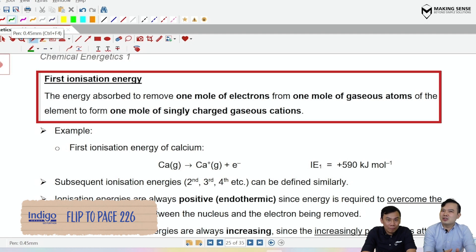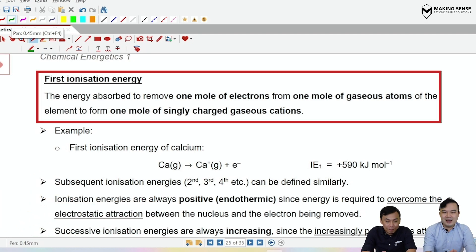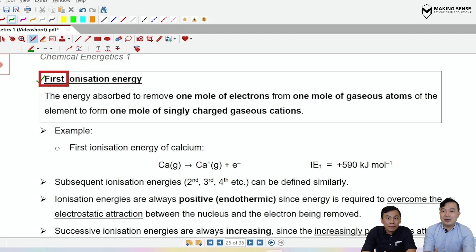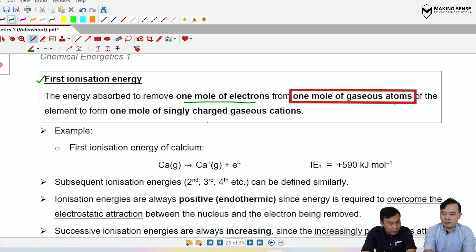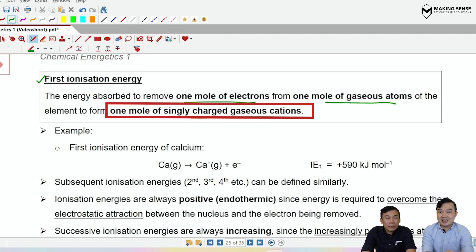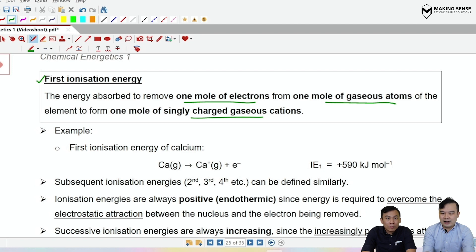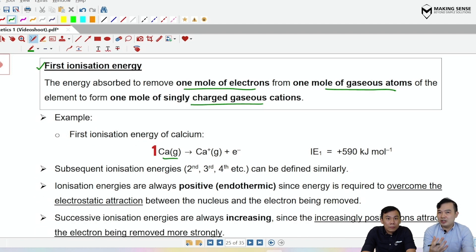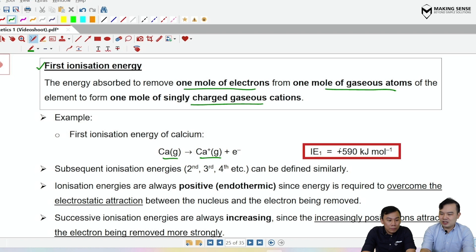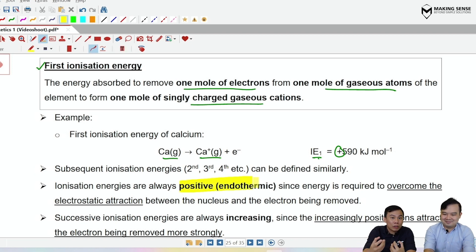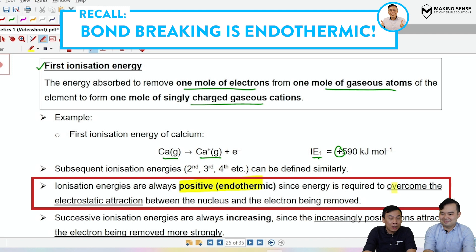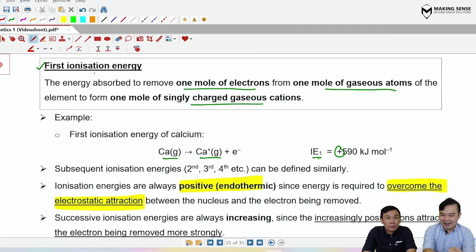The second enthalpy change needed for the Born-Haber cycle is ionization energy. The first ionization energy is the energy absorbed when one mole of electrons is removed from one mole of gaseous atoms to form one mole of singly charged gaseous cations. For calcium: Ca(g) → Ca⁺(g) + e⁻. Ionization energy is endothermic because you must overcome the electrostatic attraction between the electron and the nucleus.